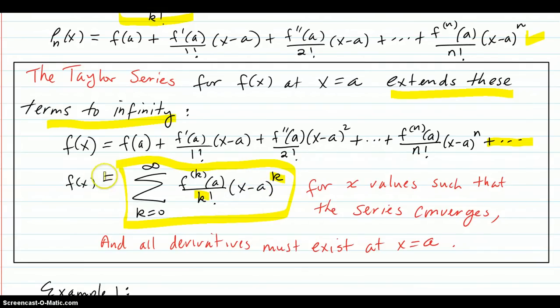But that equal sign right here is only good for x values such that the series converges. So if the series doesn't converge for a given x value, then that equal sign is not equal anymore. Some of these series will see f(x) does equal this series for all values of x, others will see they don't, only on certain x's. And also you must have all derivatives must exist at x equals a, otherwise these coefficients don't exist.